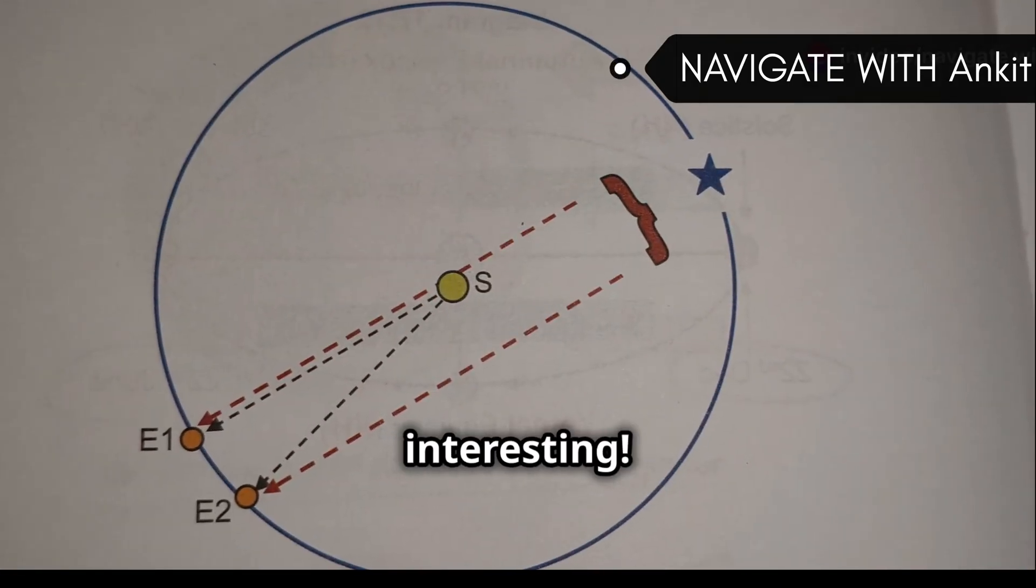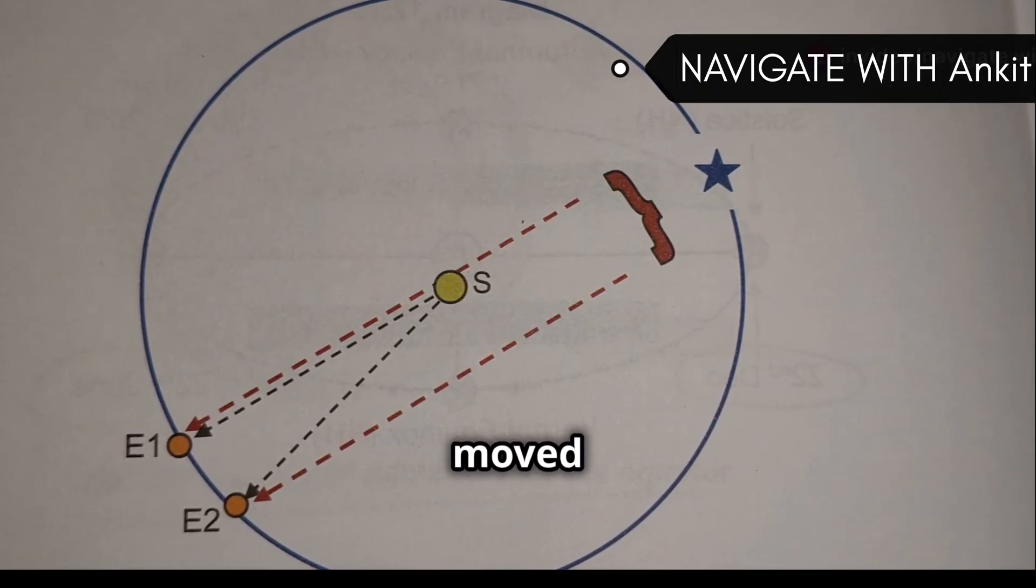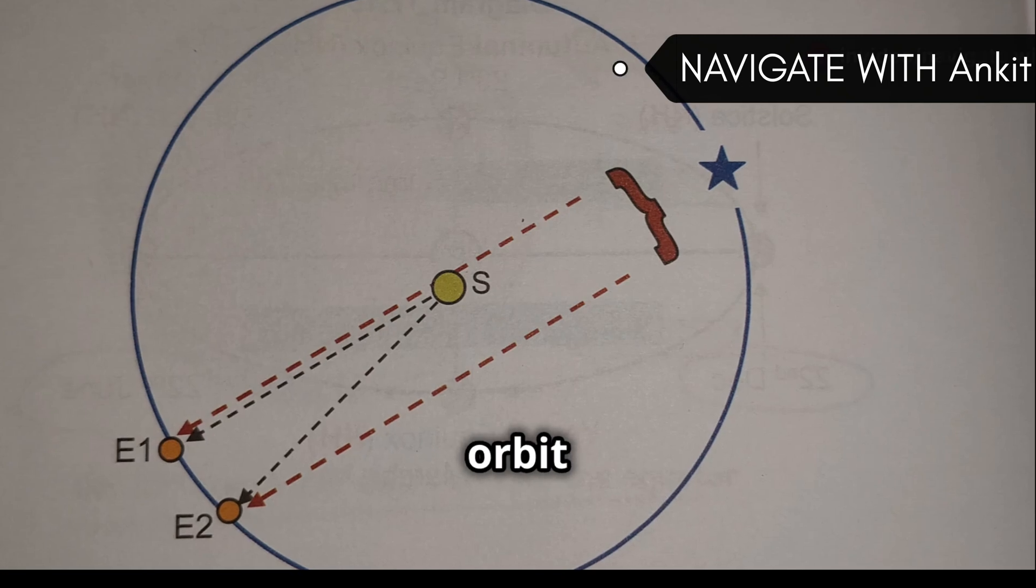But here's where it gets interesting. During that rotation, the Earth has also moved from E1 to E2 along its orbit around the Sun.